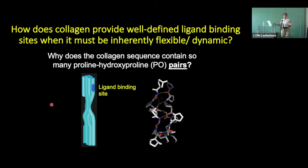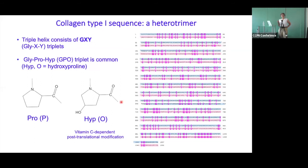The other question we were asking — which we didn't think was connected but turns out to be — is why does the collagen protein contain so many proline-hydroxyproline pairs? Collagen proteins consist entirely of glycine-X-Y triplets, and glycine-proline-hydroxyproline is the most common. You can see just how many proline-hydroxyproline pairs there are, because I've highlighted all the prolines and hydroxyprolines in pink. Where you've got a large band, you've got a proline-hydroxyproline pair — there's a substantial number.